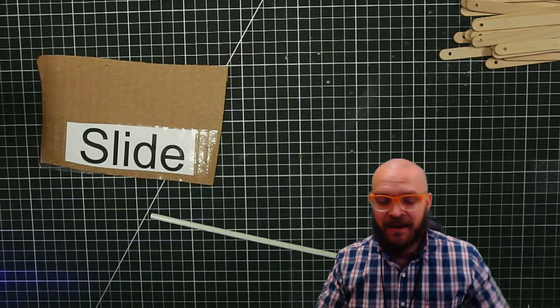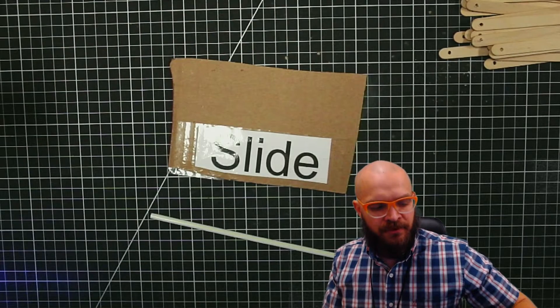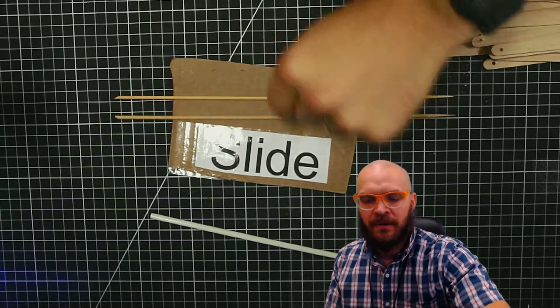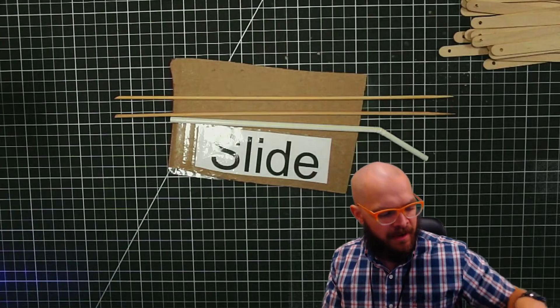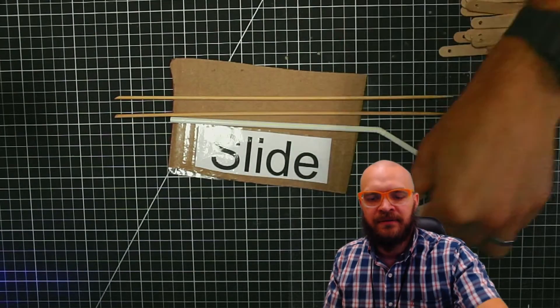Hey, this is how we make a slide. So what we need are a couple of skewers, a straw, and I will use some half popsicle sticks to get this thing going here.